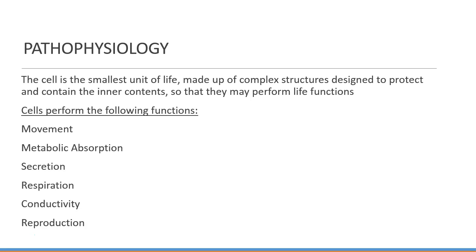The cell is the smallest unit of life. It's made up of complex structures designed to protect and contain the inner contents so that they can perform their life functions. Cells perform the following functions: movement, metabolic absorption, secretion, respiration, conductivity, as well as reproduction.